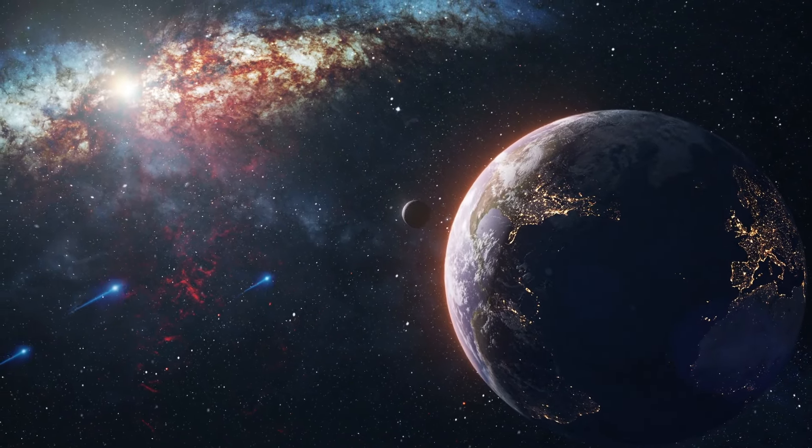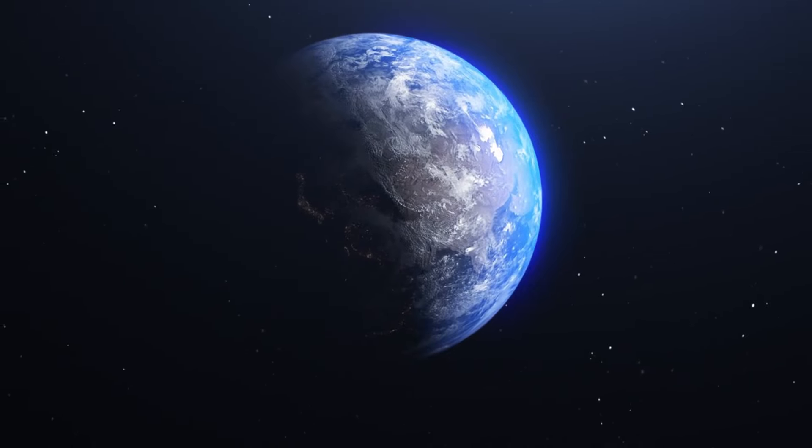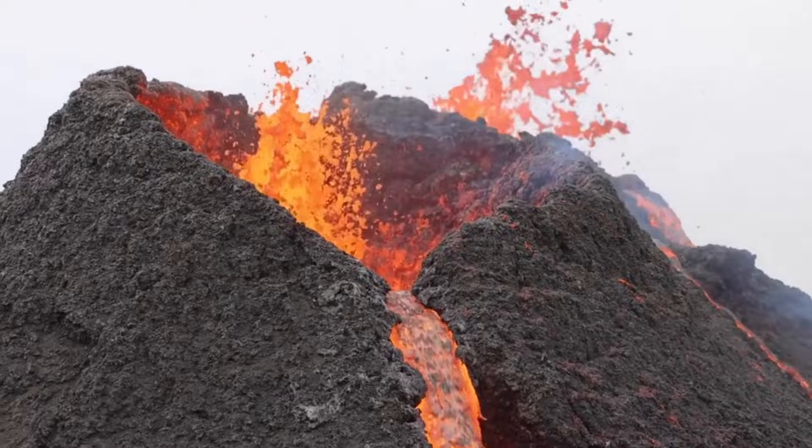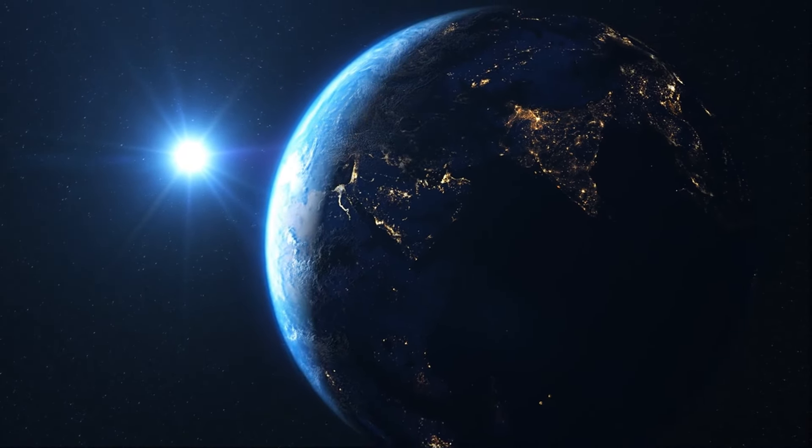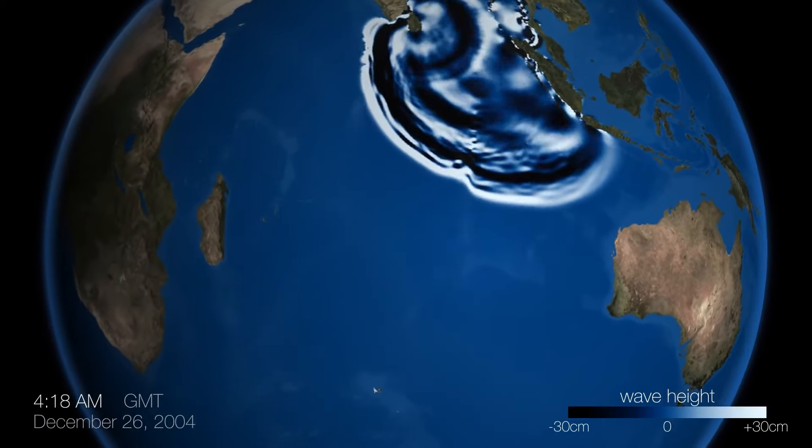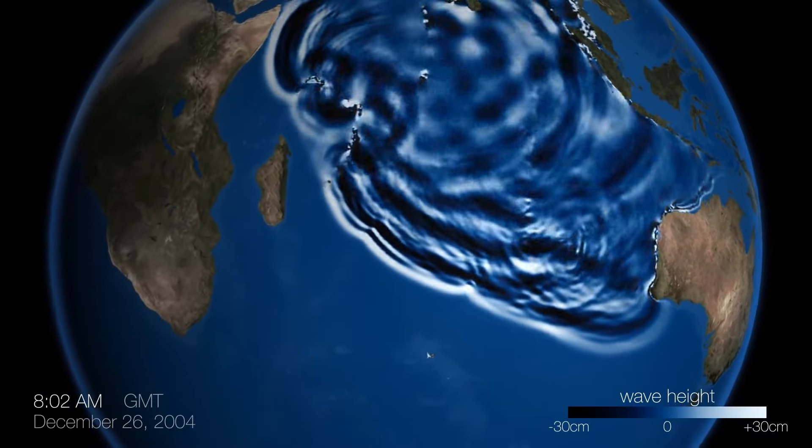However, the Earth's rotation can also be affected by events such as earthquakes and volcanic eruptions, which can redistribute the planet's mass and alter its rotational speed. For example, the massive 2004 Indian Ocean earthquake was so powerful that it slightly shifted the Earth's mass, resulting in a small but measurable change in the planet's rotation.